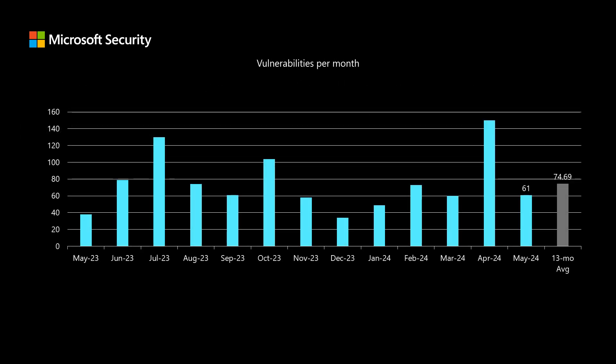Before I dig into today's release, I'd like to compare it to the previous 12 months to really get a feel for how this release stacks up. We have 61 newly published vulnerabilities in today's set. That's down a little bit from our average of around 74 and a half per release.